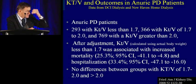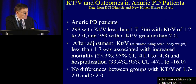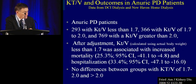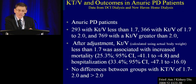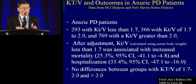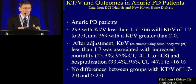The third study looked at patients from the time they became anuric — urine output less than 100 cc — using data from DCI and a home dialysis program, with about 300 patients in the lower dose groups and almost 800 in the larger dose group. After adjustments, KT/V less than 1.7 was associated with an increased mortality rate, but importantly, there was no difference between groups with KT/V of 1.7–2 and those greater than 2. All three studies together show the same pattern: KT/V less than 1.7 leads to worse outcomes; 1.7–2 and greater than 2 yield equivalent results.